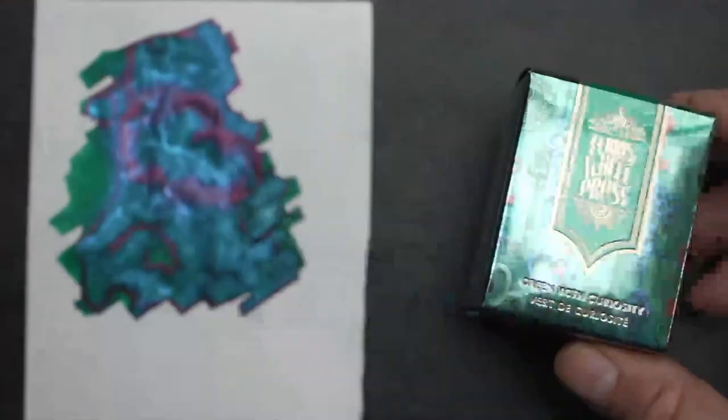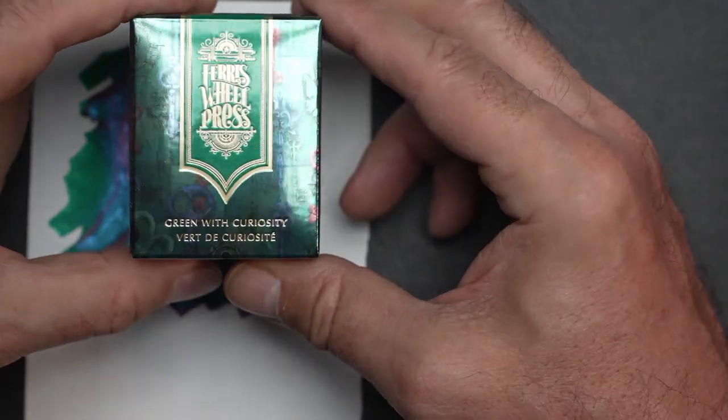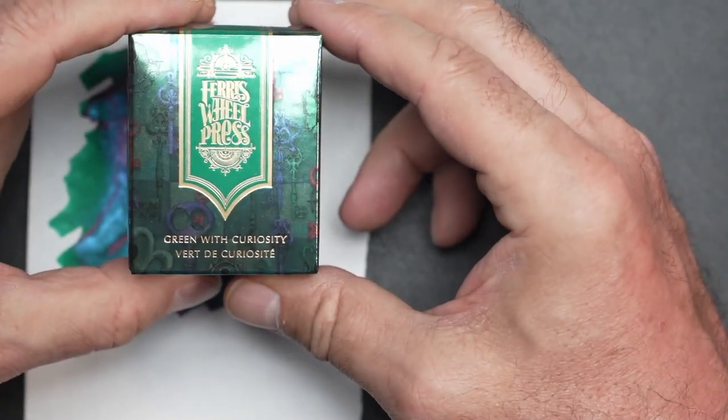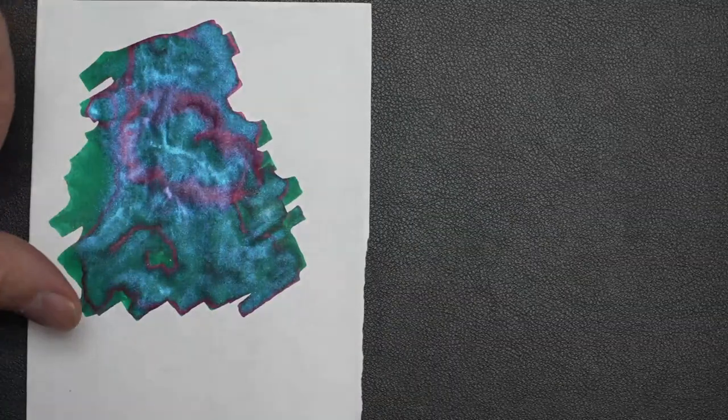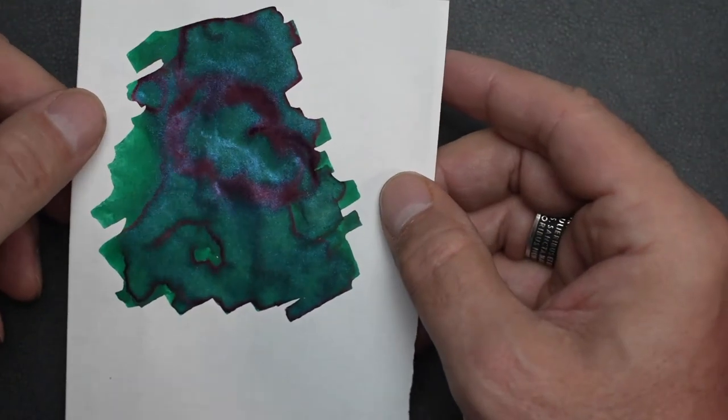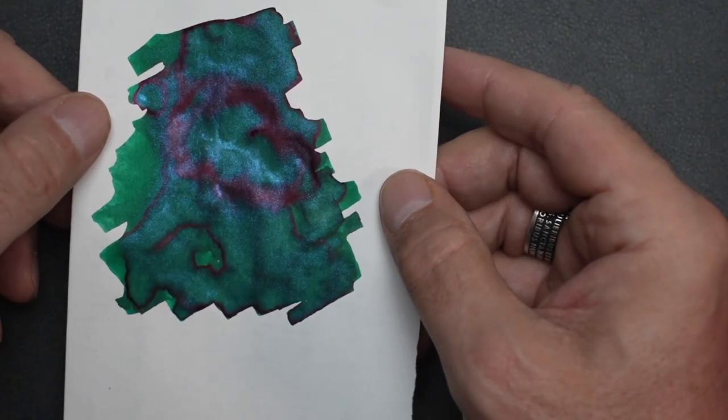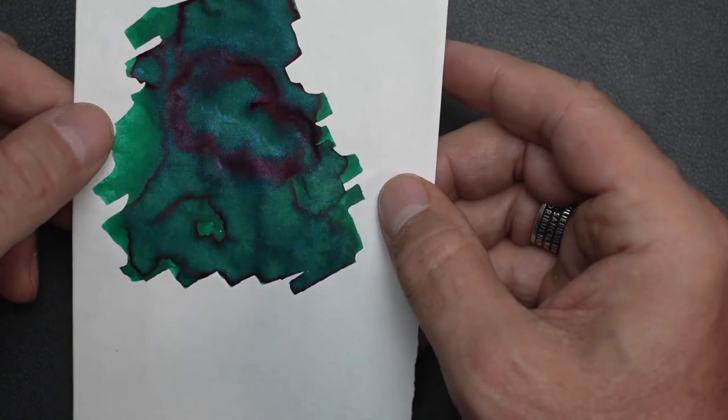And then we've got the last one in this Down the Rabbit Hole series, which is Green with Curiosity. Very nice. And when you see the swatch and the box, again, spot on. They did a really good job to reflect the ink on the box. And here's the swatch. Isn't that gorgeous?